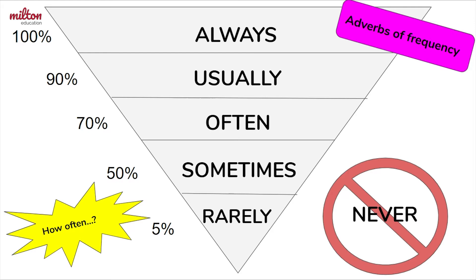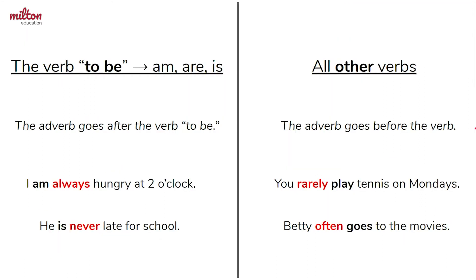Now, when we talk about actions, we are talking about verbs, because a verb is an action word. So there are two types of verbs that we're going to talk about. We're going to talk about the verb to be, which in the present simple is am, are, or is, and then all other verbs.